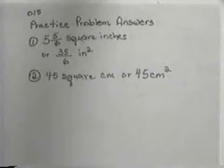Practice Problems answers are number 1, 5 and 5 6's square inches or 35 6's square inches. Number 2, 45 square centimeters. If you disagree with one of these answers, see if you can find what you did wrong. If you cannot, stop the tape and go get some help.